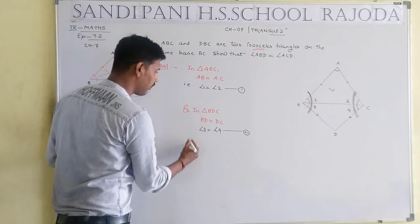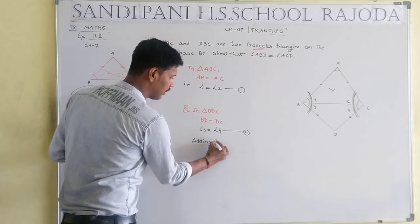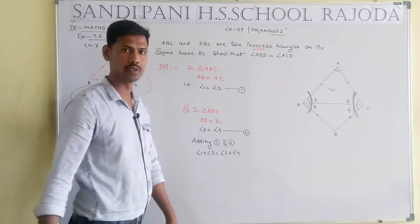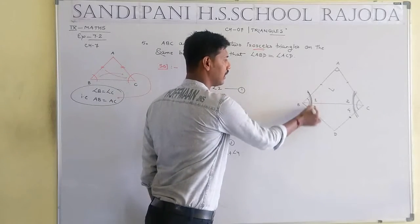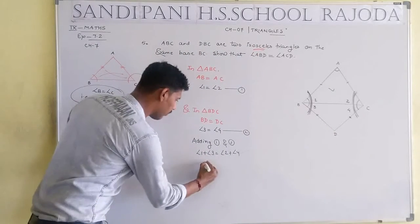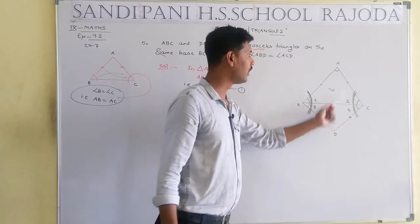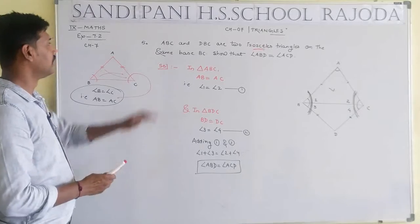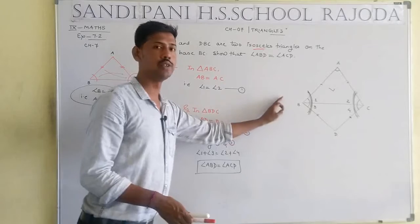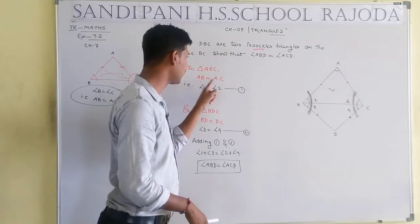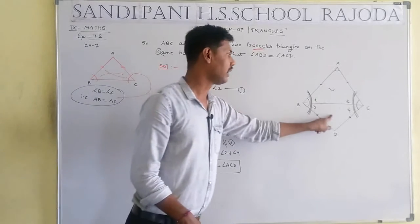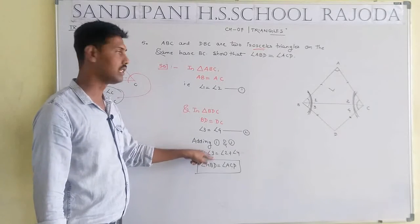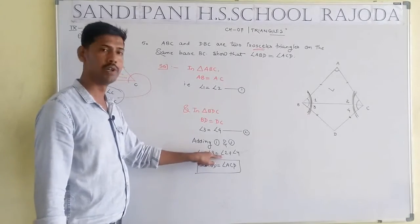Adding equation 1 and equation 2: the left-hand sides are added together and the right-hand sides are added together. Angle 1 plus angle 3 equals angle ABD, and angle 2 plus angle 4 equals angle ACD. Therefore, angle ABD equals angle ACD. Hence proved.